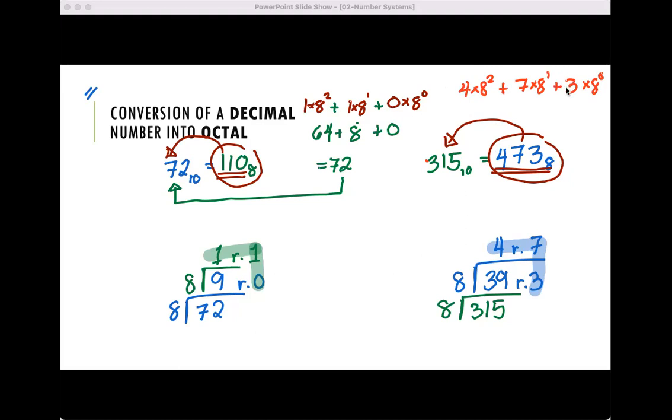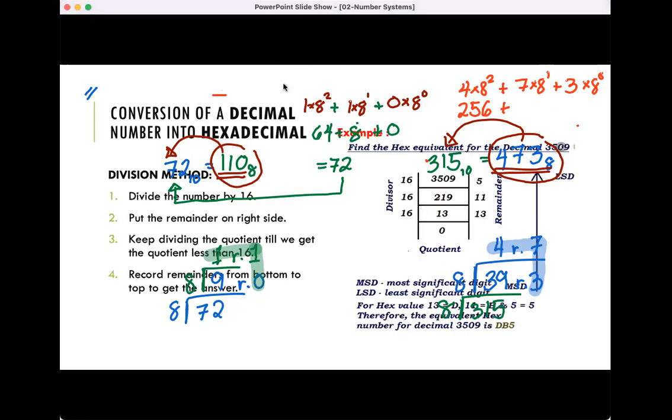So that is 4 multiplied by 8 raised to 2, which is 256. We add it to 7 times 8, which is 56. And any number raised to 0 is just 1, so it's like 3 times 1, which gives us 3. And if you add it, that would be 315. That's back to this value.